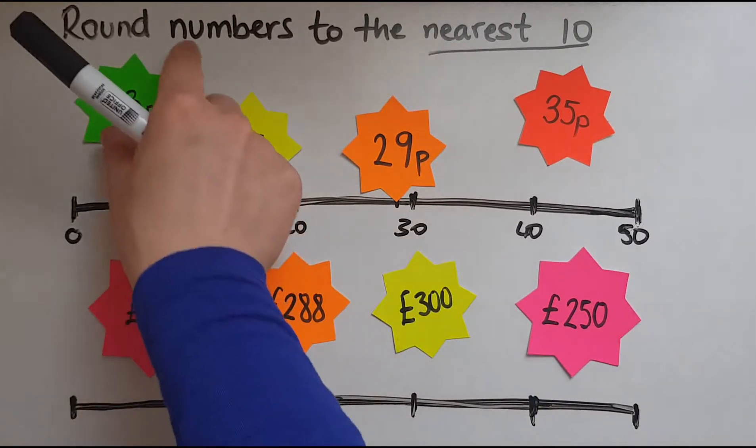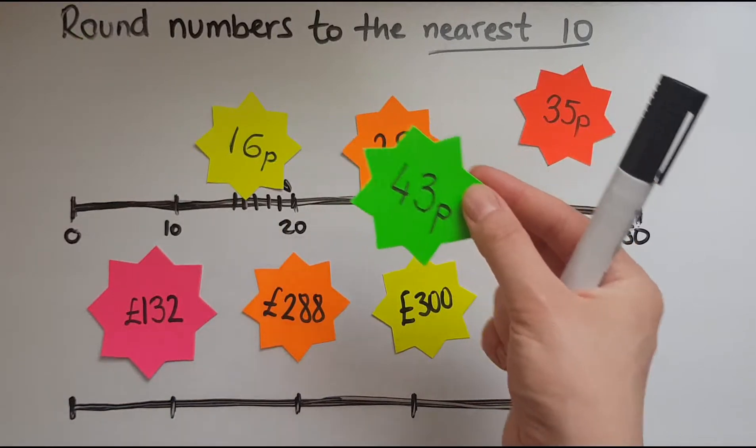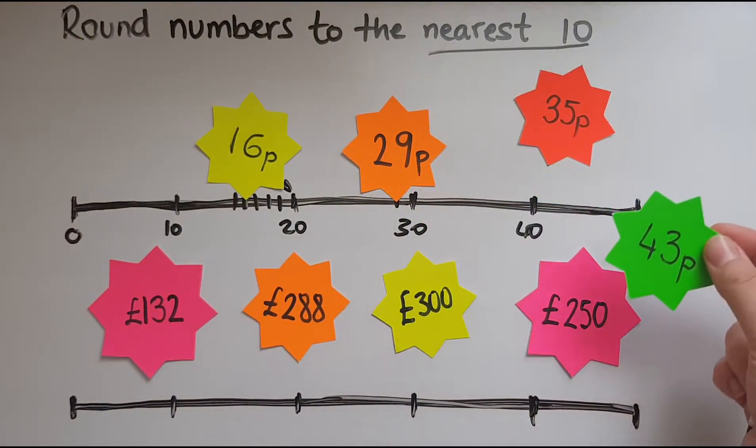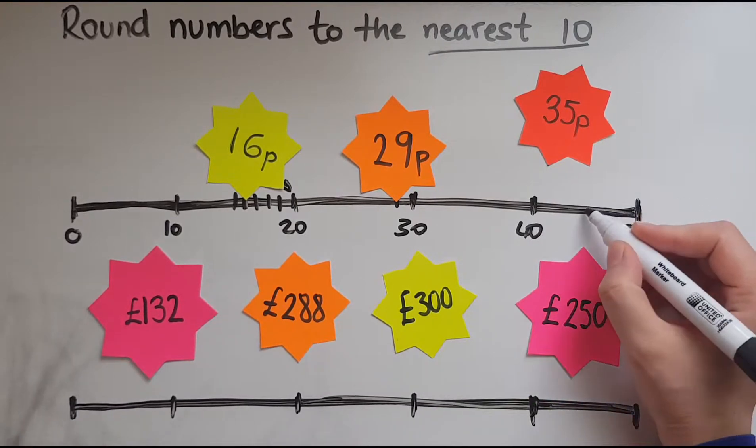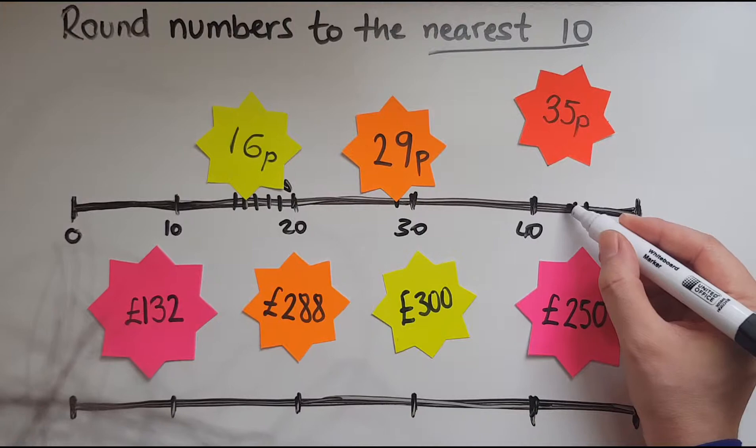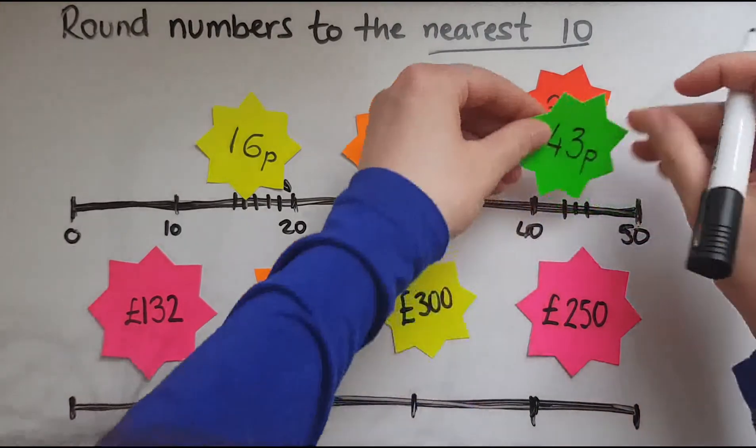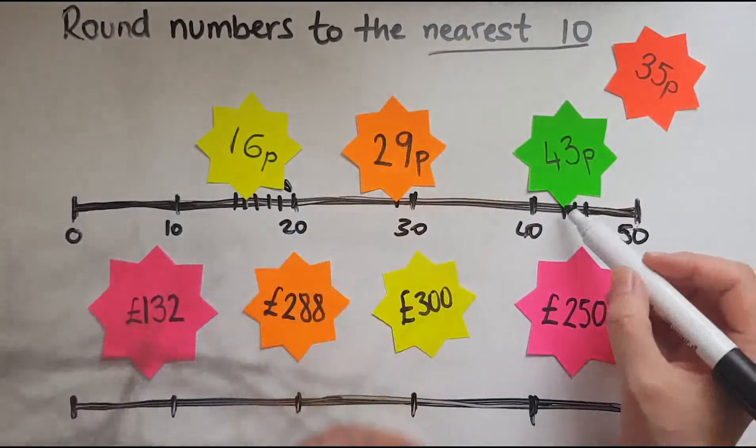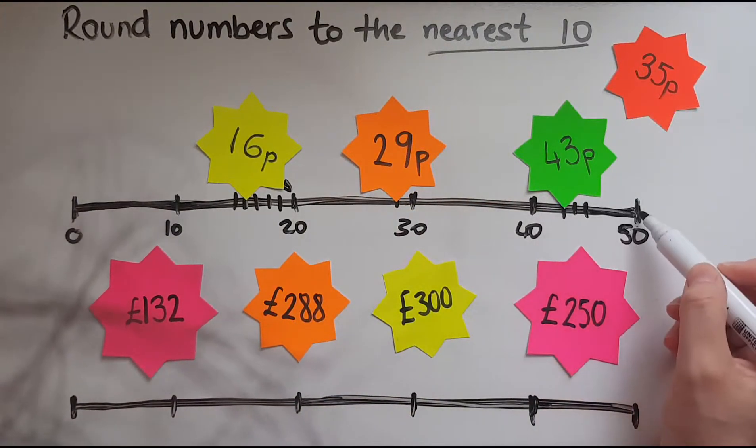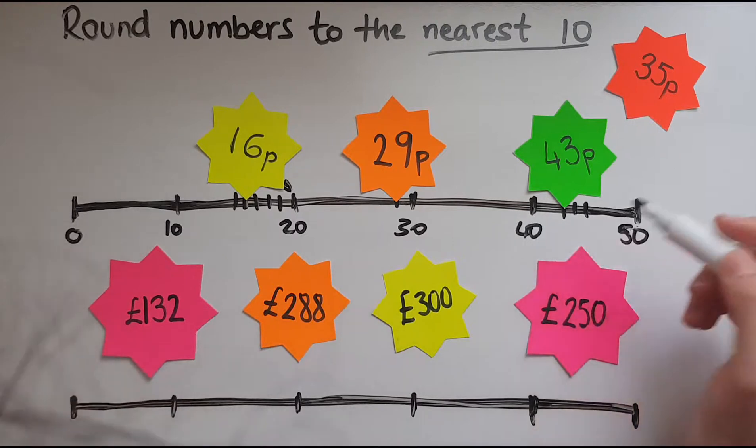Now let's have a look at 43. Where does that go? 43 is between 40 and 50. There would be 45, so 44, 43 would be here and as you can see 43 is much closer to 40 than it is to 50 so we'll round it to 40.